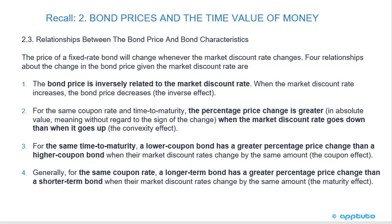Interest rates go up, prices go down. When the market discount rate increases, the bond price decreases. Second, for the same coupon rate and time to maturity, the percentage price change is greater in absolute value when market discount rates go down than when they go up — that's the convexity effect. Third, for the same time to maturity, a lower-coupon bond has a greater percentage change than a higher-coupon bond when market discount rates change by the same amount — the coupon effect.